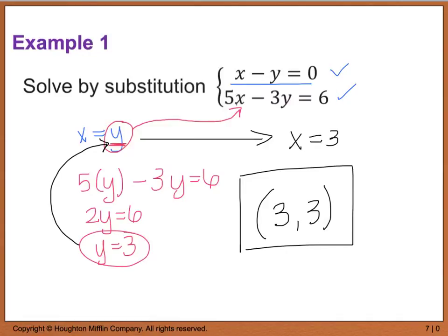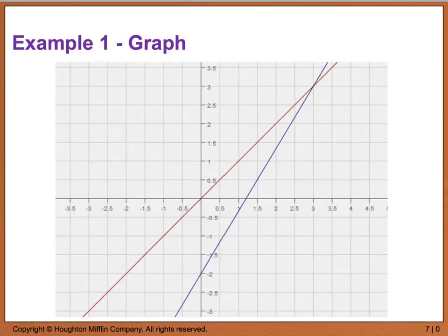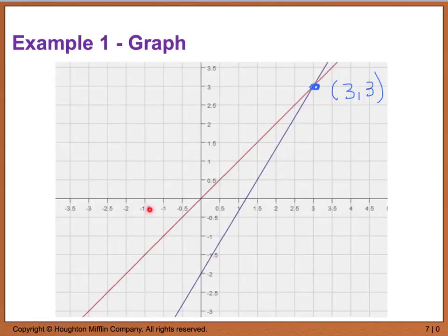We can also double check our work by graphing this system. When graphed, we end up with a point of intersection at the coordinate point (3, 3). If you don't have a graphing calculator at home, you can type 'graphing calculator' into Google and use the first or second result that pops up. So if you have internet access, you are able to graph.